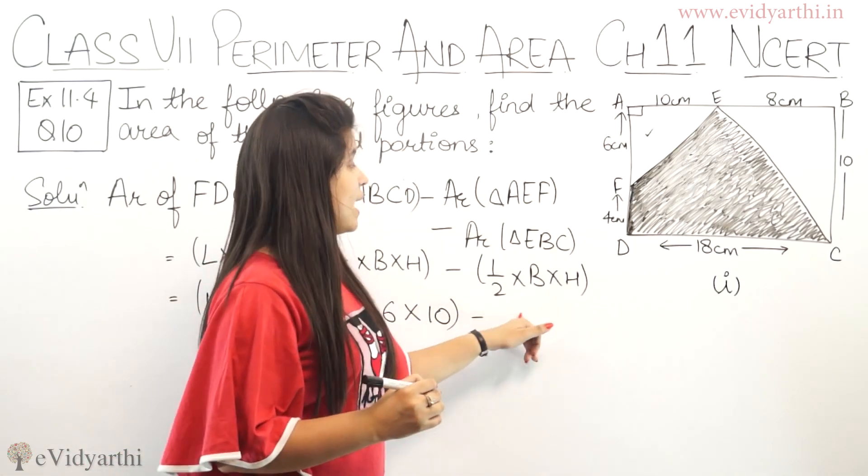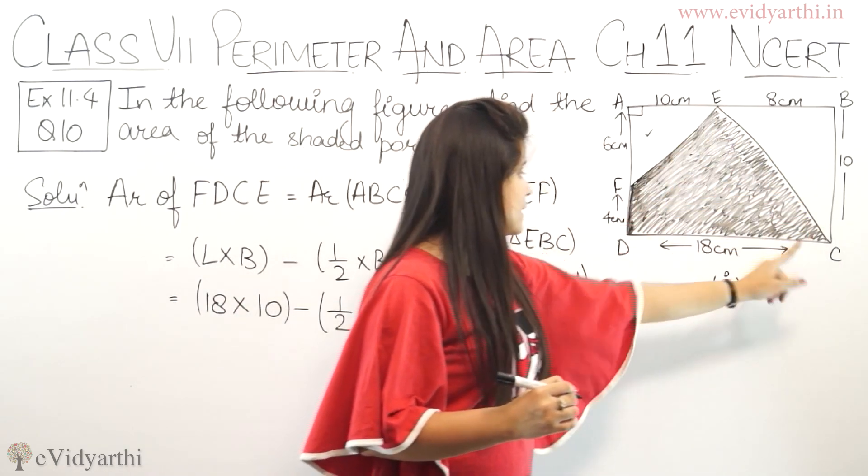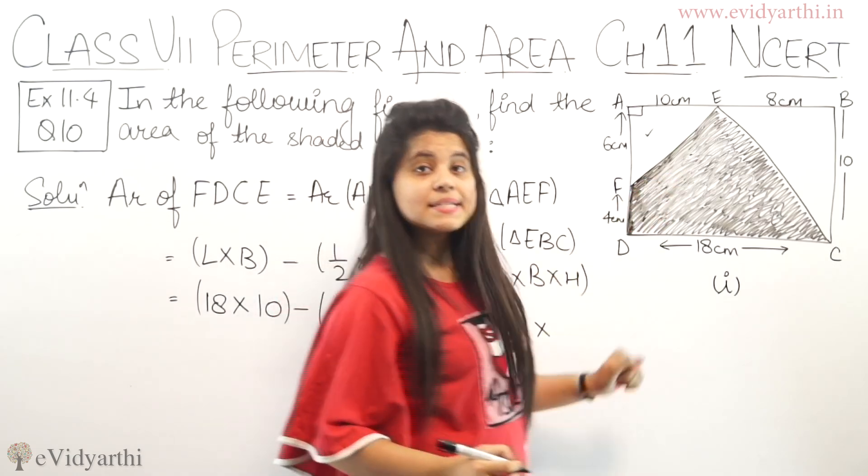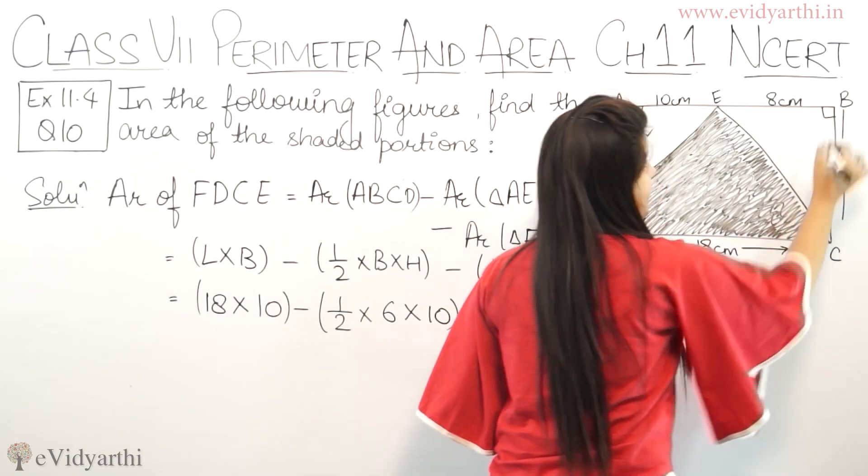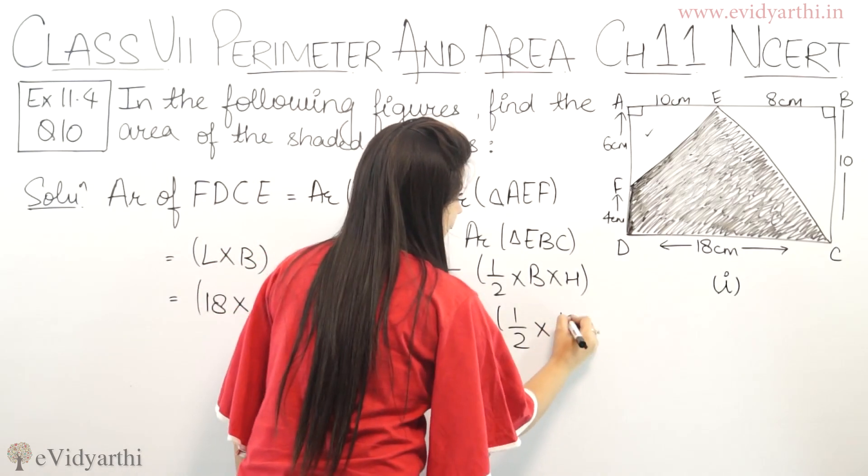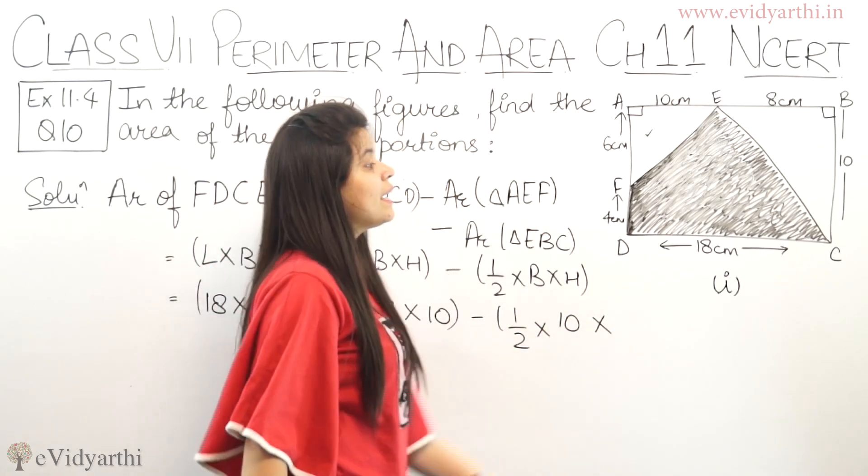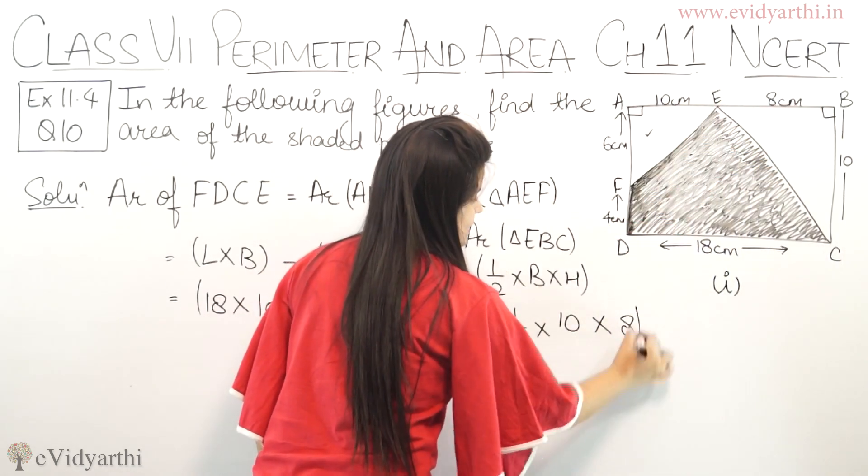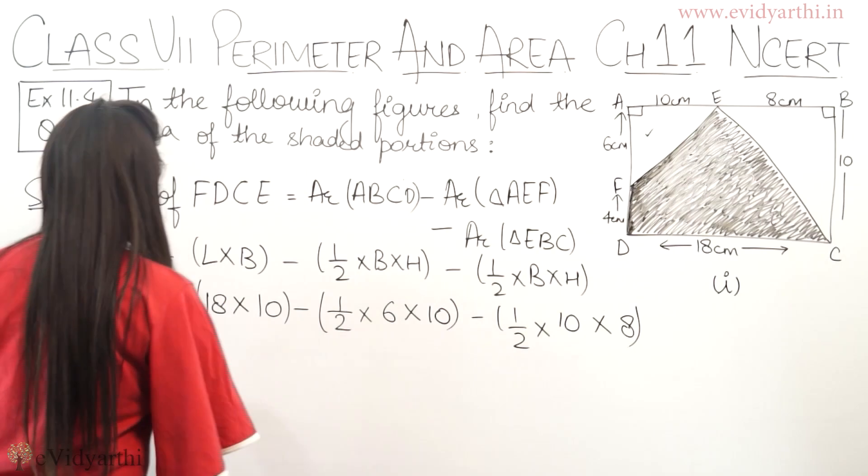For the last triangle EBC, half into base BC which is 10, multiply by height BE which is 8 cm.